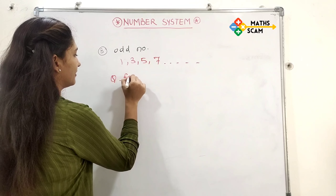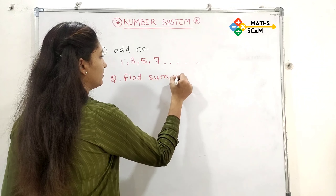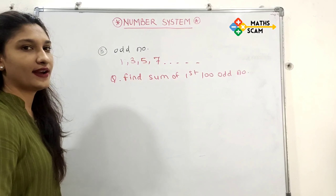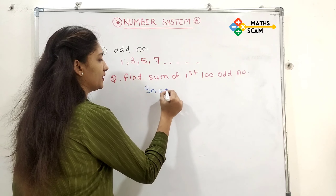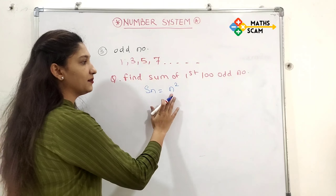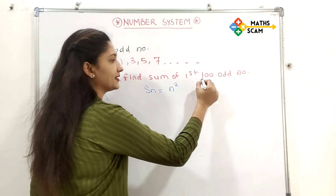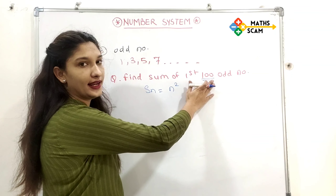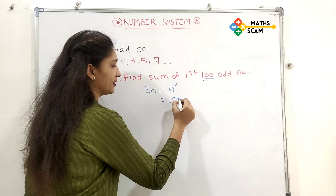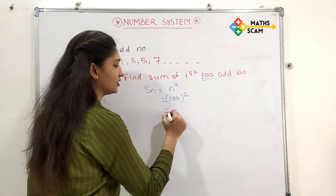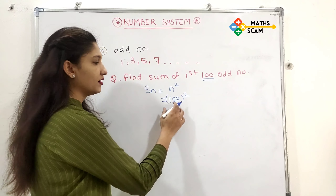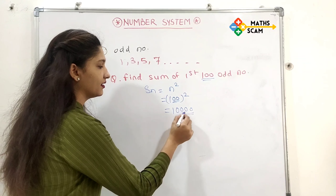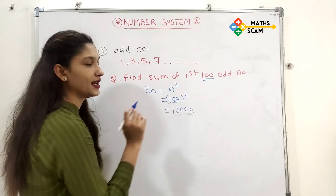If a question comes: find the sum of the first 100 odd numbers. The formula for odd numbers is n squared, where n is the count of odd numbers (i.e., the last term's position). Here n is 100, so 100 squared. 100 has two zeros; doubling them gives four zeros. So the sum of the first 100 odd numbers is 10,000.